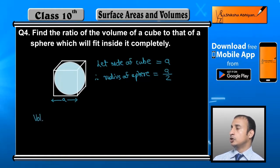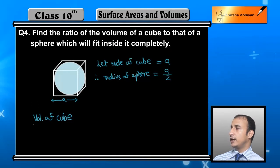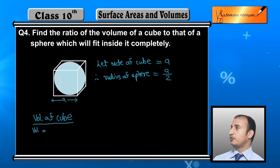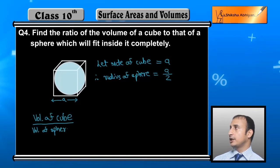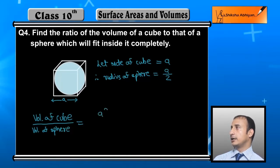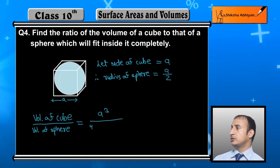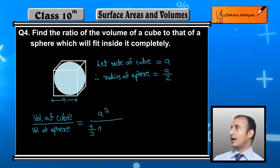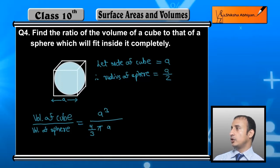We need to find the ratio of the volume of cube to the volume of sphere. Volume of cube = side³ = a³. Volume of sphere = (4/3)πr³, and here r = a/2.